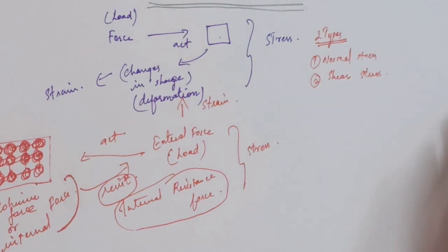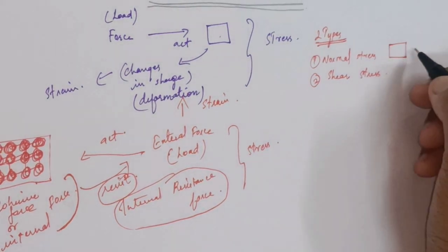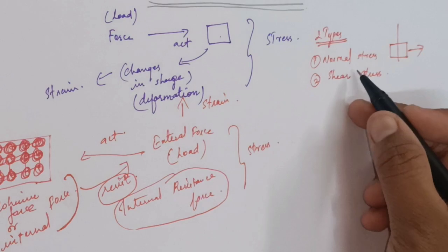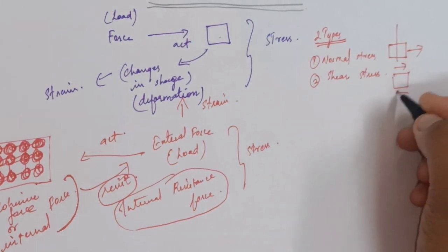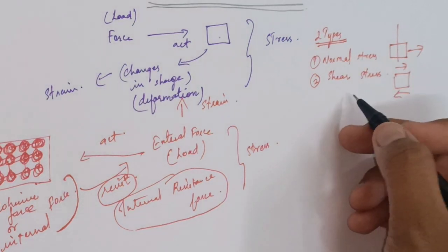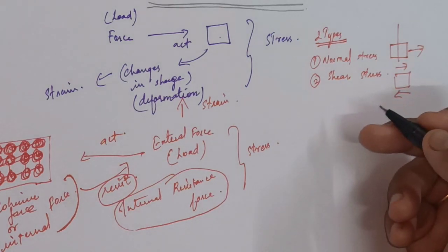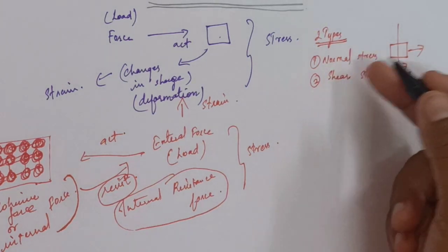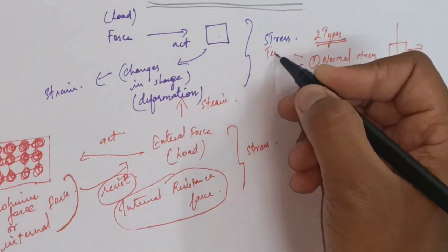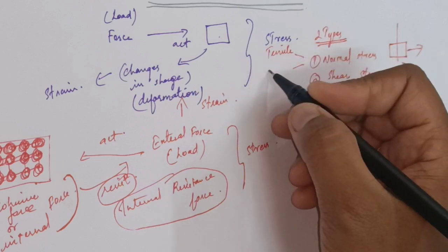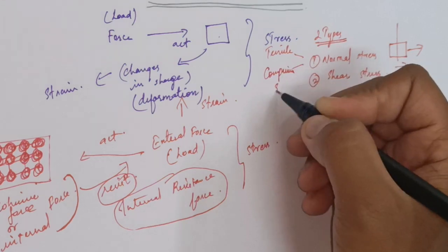Normal stress is when the force is acting perpendicular to the cross section of the object. Shear stress is when the force is acting parallel to the cross section of the object. In dealing with dental materials, you need to know this classification. Under normal stress, you have two types: tensile stress and compressive stress.